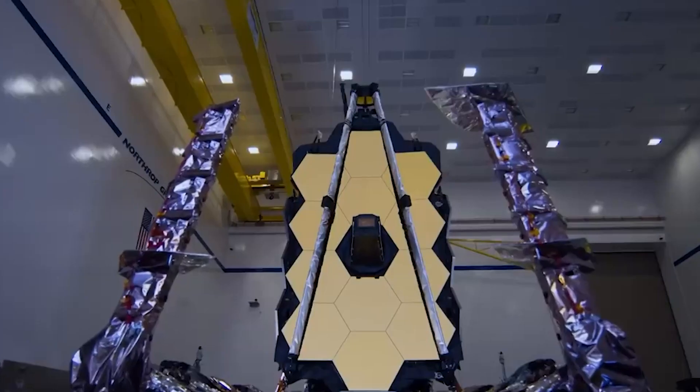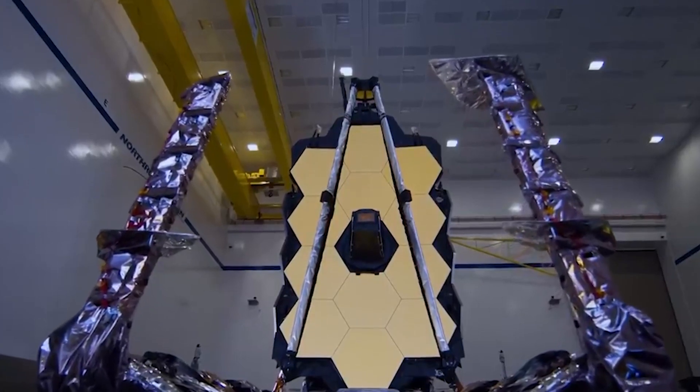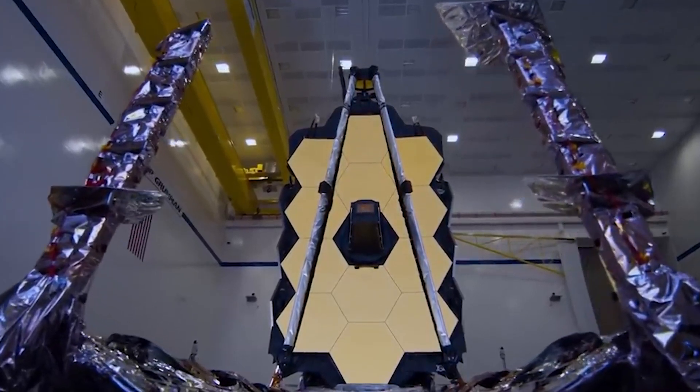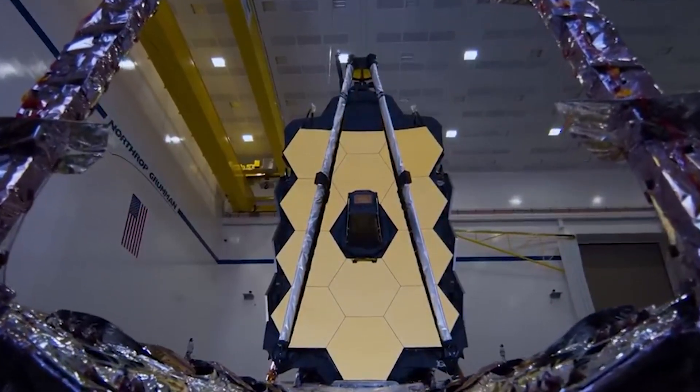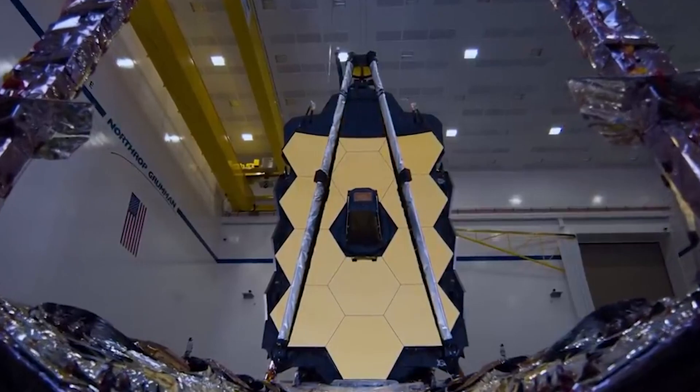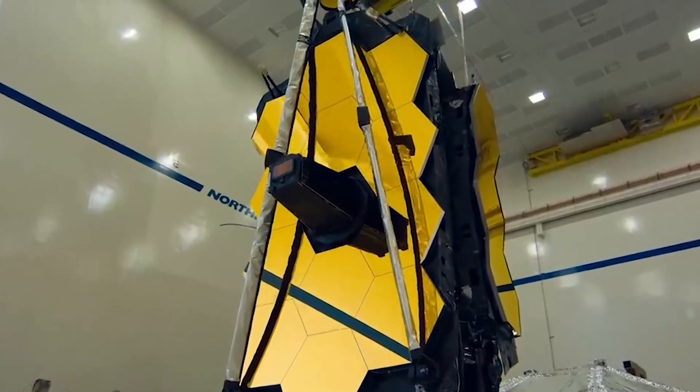In fact, it's so big that they designed it so it can unfold like origami, just so it can fit in a rocket. Rao Gurney compared the telescope's sunshield to the size of a tennis court. That's the big silver thing around it that looks kind of like an umbrella, she said.